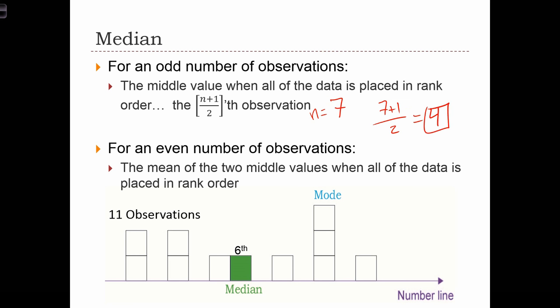And that can help you find out which value in your sorted list is going to be the median. In the case when you have an even number of observations, then what you're going to do is find the two middle values and take the average of the two of them together.